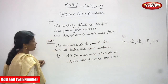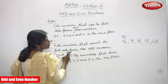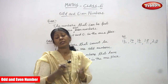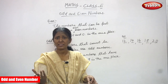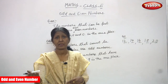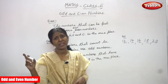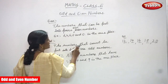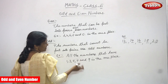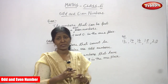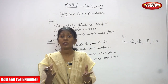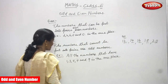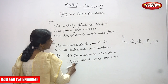Now we are going to see the odd number. The numbers that cannot be put into a pair are odd numbers. For example, if you take nine children in a group, you cannot make pairs because four pairs give you eight, and one child remains. You cannot make a complete pair, so nine is an odd number. The numbers that cannot be put into pairs are odd numbers.